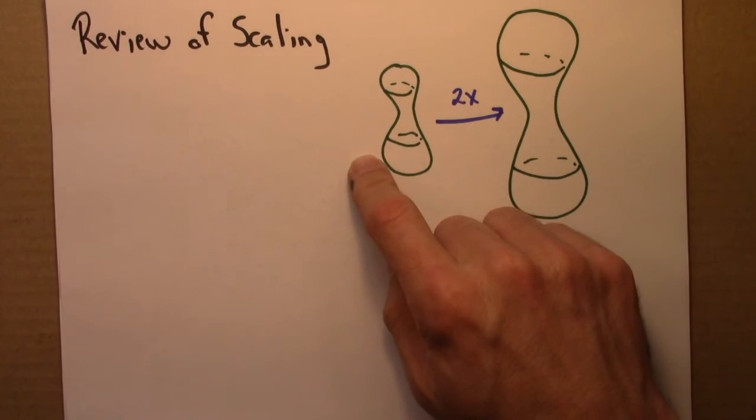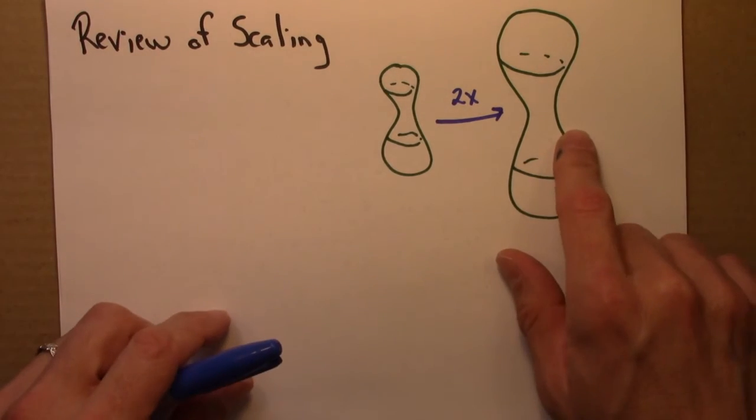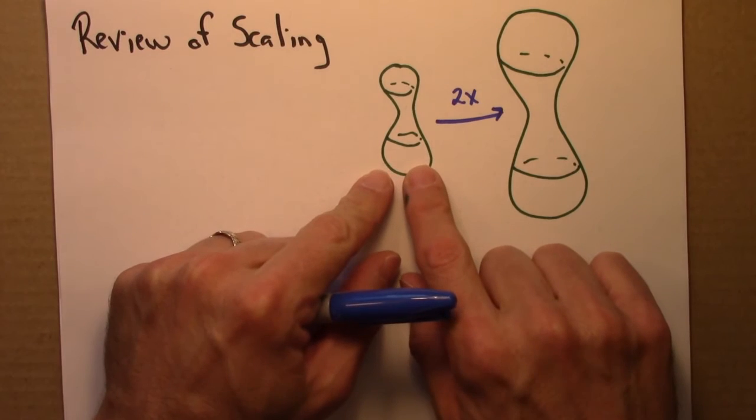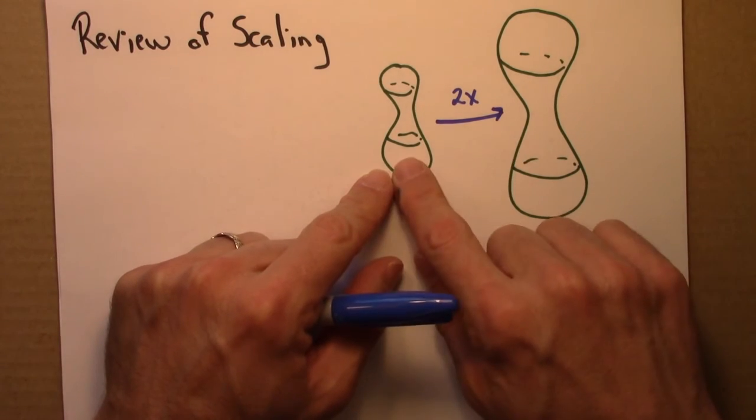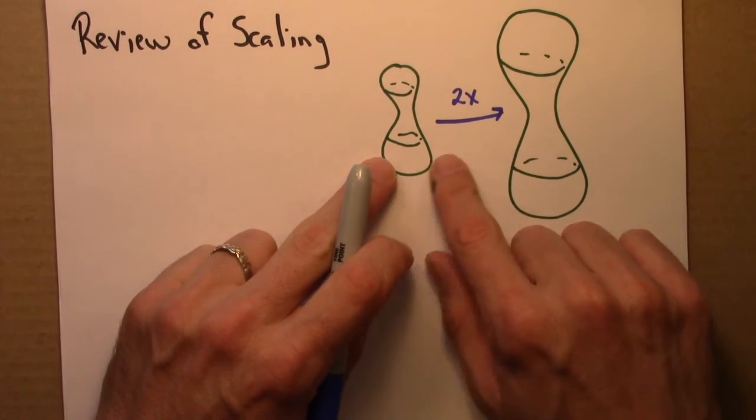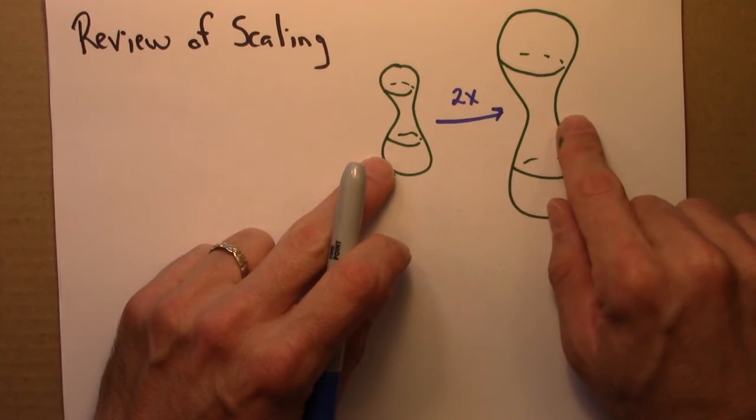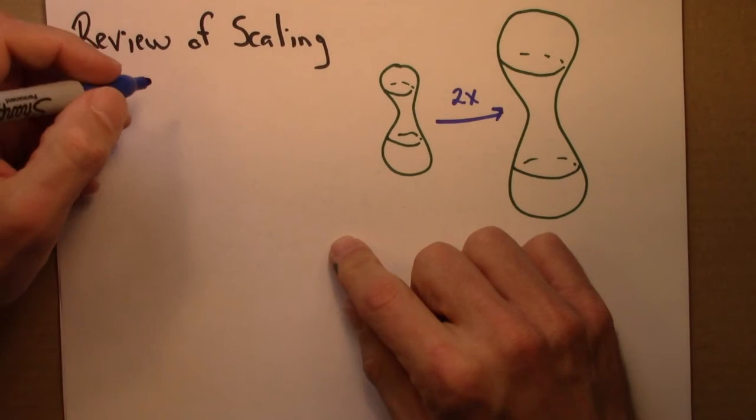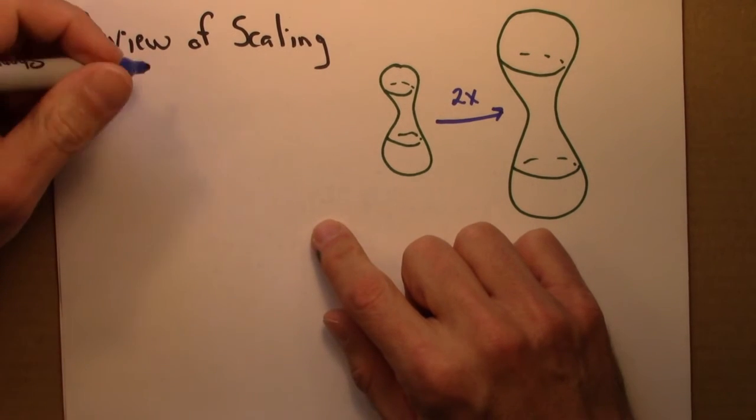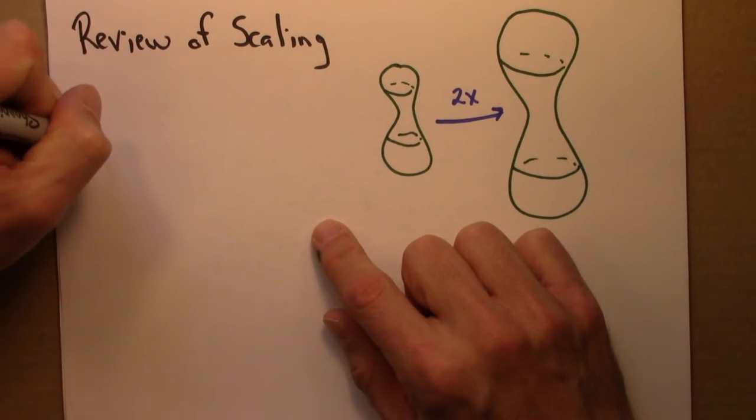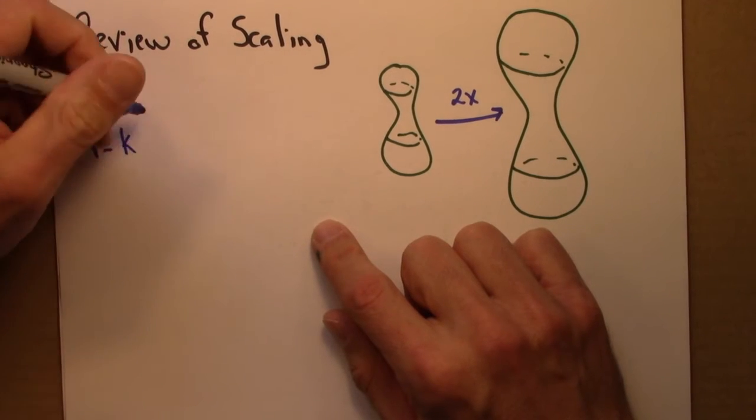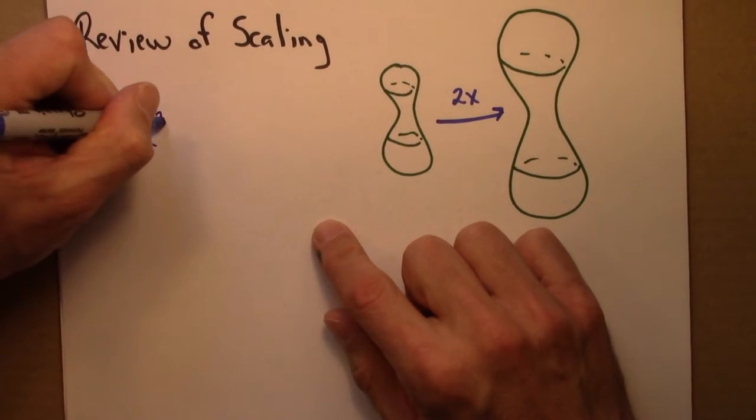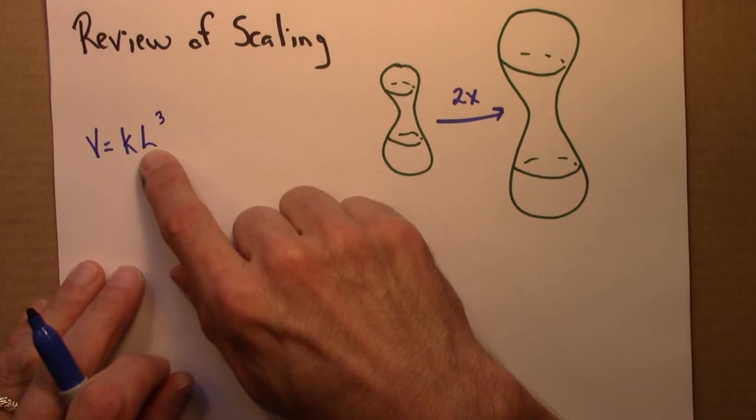Alright, so suppose in particular that we're interested in the volume. How would the volume of this shape change? Well, volume scales with length cubed. So I would write that volume scales as length cubed.